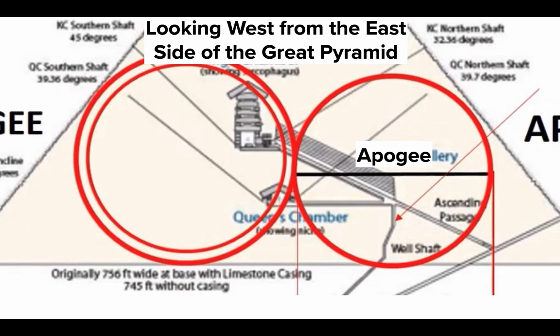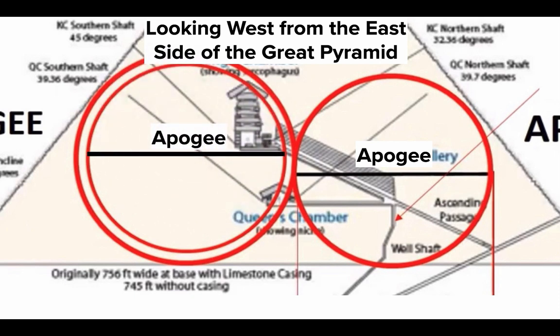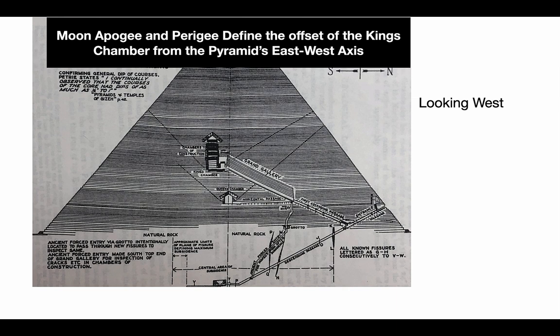Now let's look west — we're on the east side of the pyramid looking at a cross section. You can see the circles: apogee has the diameter through it. There's also an apogee circle raised up a bit, put inside the circle that represents perigee. The apogee circle goes right through the center of the Queen's Chamber and also through the top of the King's Chamber. Moon apogee and perigee define the offset of the King's Chamber on the east-west axis.